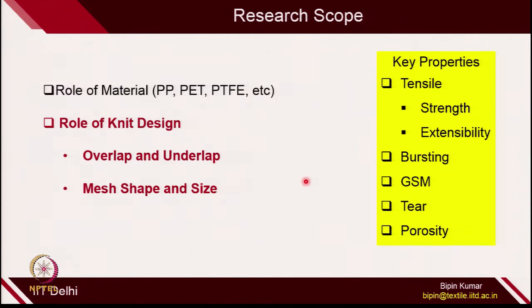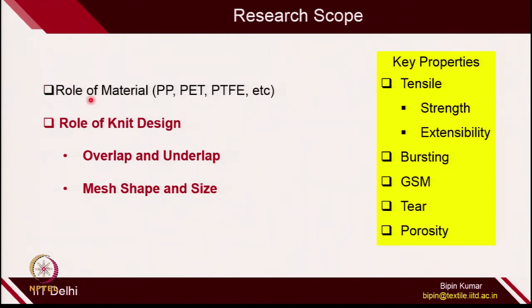In agriculture and construction, there are a lot of research scopes. You can check different types of materials — HDPE, polyester, polytetrafluoroethylene. Similar to surgical mesh, you can play with different knit designs, overlaps and underlaps, and different mesh sizes and shapes. Key properties to check include tensile, bursting, GSM, tear, and porosity. In the market, these fabrics are easily available but literature on how different materials and knit designs control fabric properties is scarce. In the next class, I will talk about more applications related to e-textiles, which is more demanding in the 21st century.